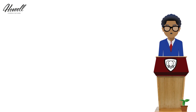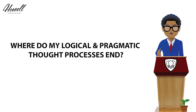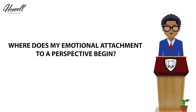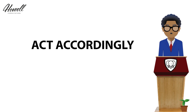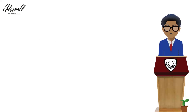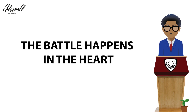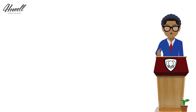Step two: detach emotionally. It is important to be mindful of the fact that when you are wholly convinced of a thought, you are likely to also be emotionally attached to it. To detach from emotion is to make the conscious effort to identify where your logical and pragmatic thought processes end and where your emotional attachment to a perspective begins, and to then act accordingly. Emotional detachment is an essential element to changing your mind because often the battle isn't really with making logical sense of things — rather, the battle is happening in your heart with how you feel about the thought in the first place.